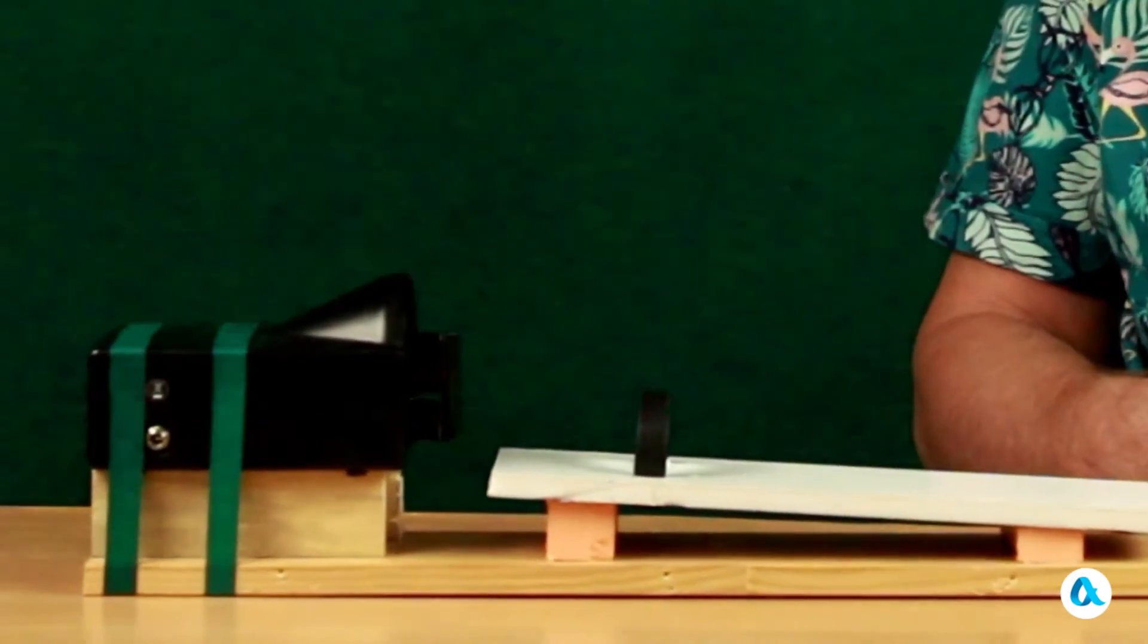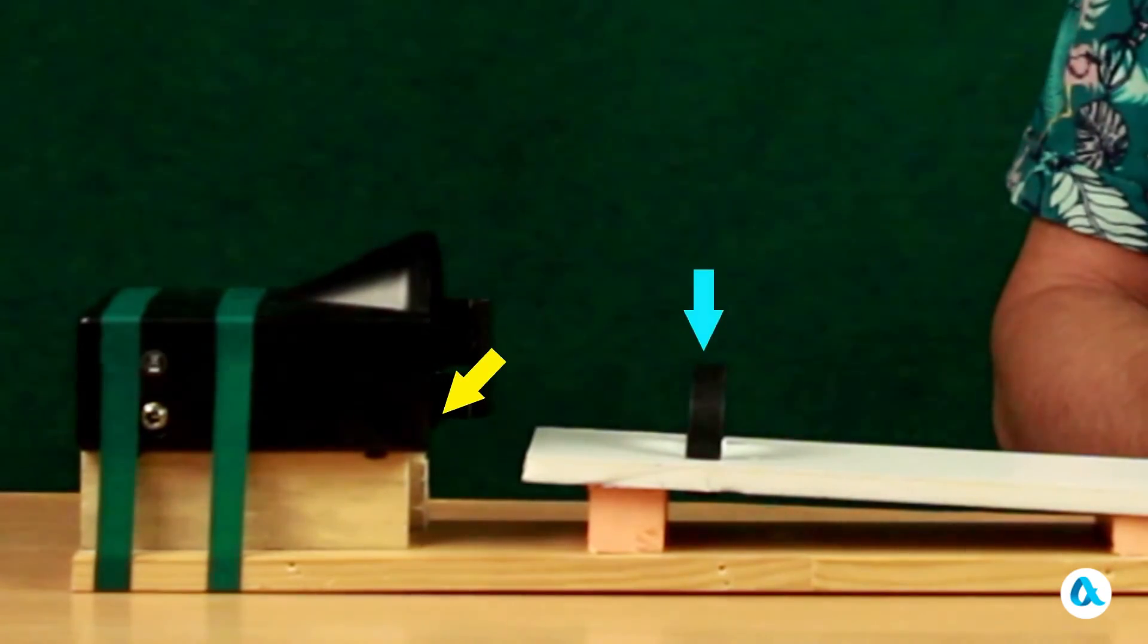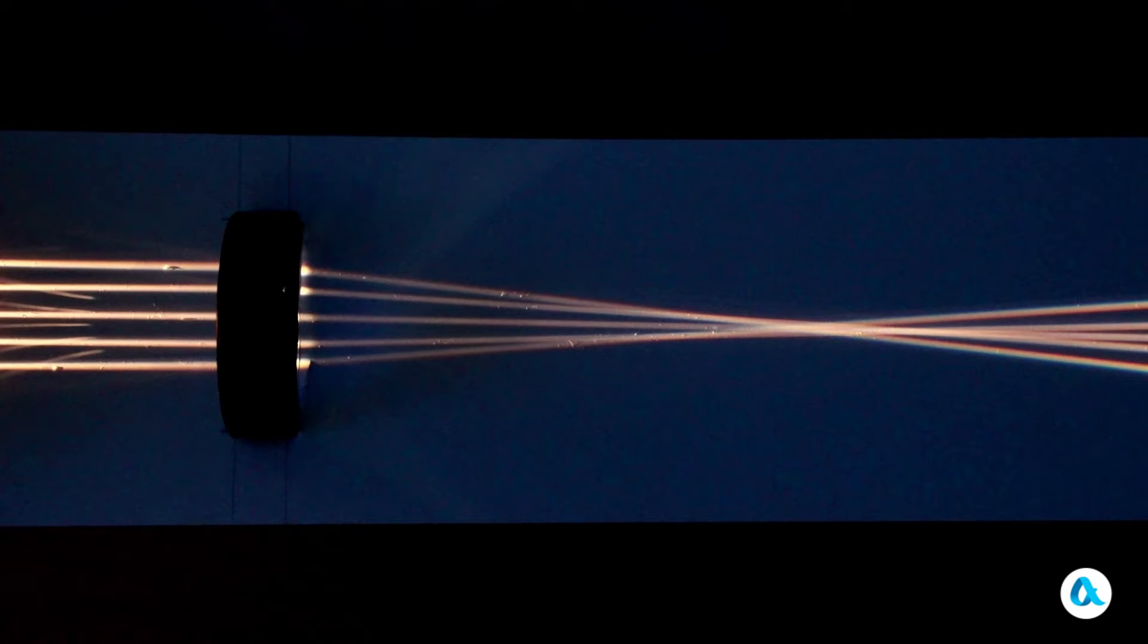In order to observe how light converges into a single point, we employ this particular arrangement. Parallel beams of light will be formed using parallel slits, and then they will pass through a lens. We will be in the dark observing all of this. Right here we can see a total of five parallel rays. After passing through the lens, they converge to a single point. This spot is called a focal point, which in translation from Latin means a hearth.